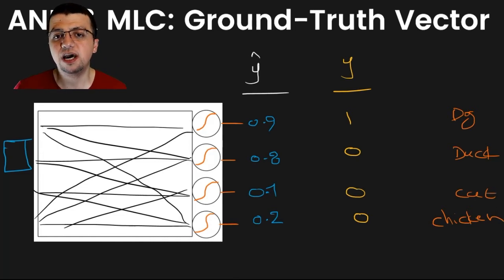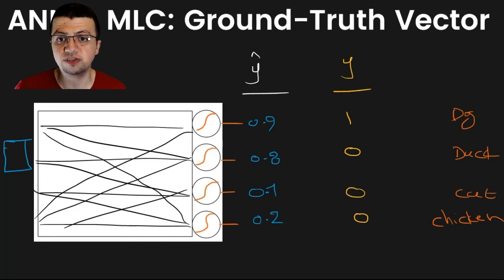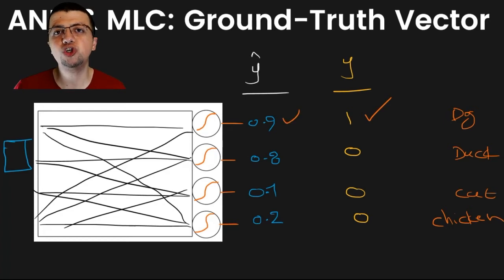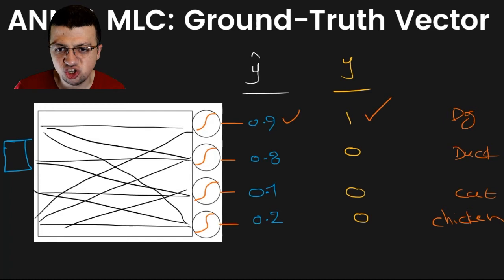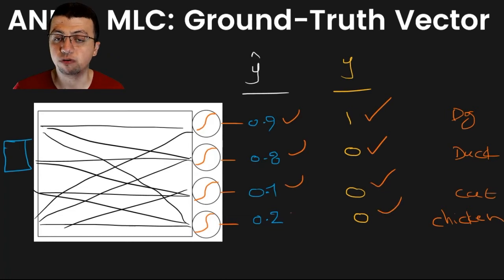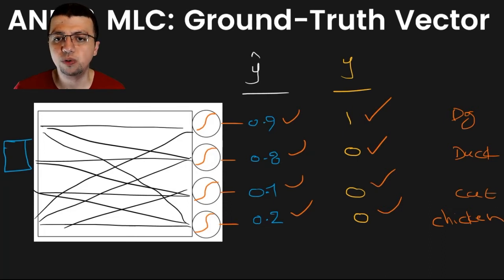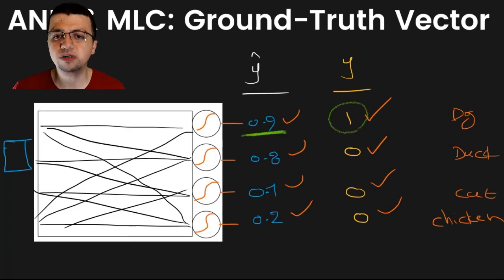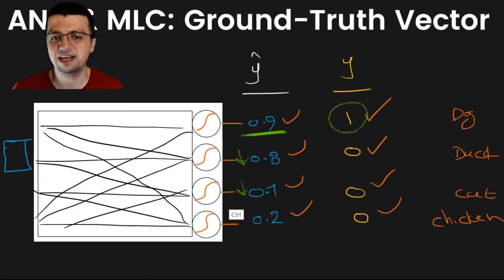In multi-class classification, you want to encourage your neural network to output high values for, say, the first class, and very low values — as low as 0 — for the second, third, and fourth classes. This means the input data belongs to only the first class. You want a very high output for that class and lower everything else for all other classes.